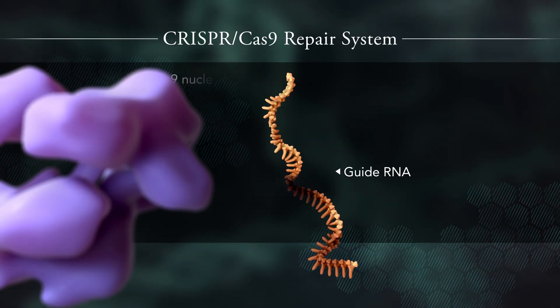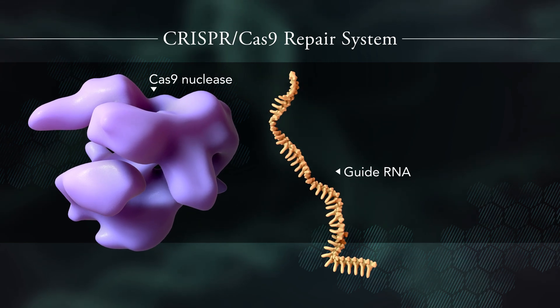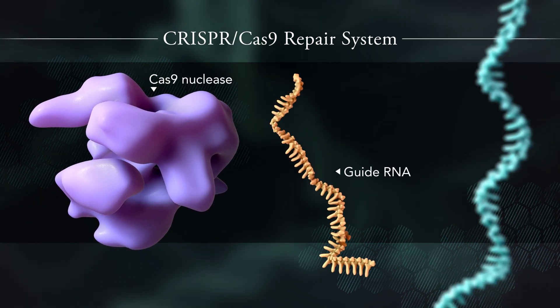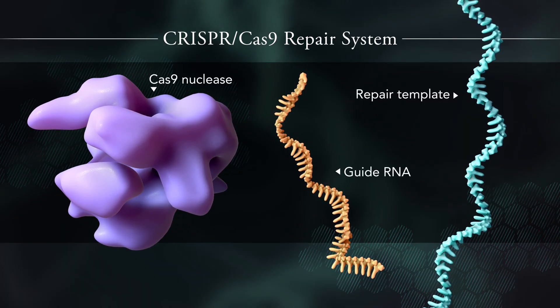The Cas9 nuclease enzyme, a type of molecular scissors that cuts the genetic sequence at the precise binding site. And a repair template containing the correct genetic sequence for the gene.